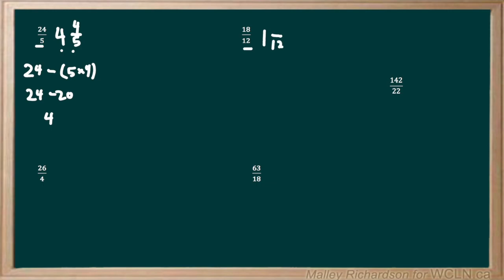To find the numerator, we take the numerator of the original question and subtract it by the denominator times the whole number. We know that 12 times 1 is just 12, so we get 18 minus 12 to get our final answer of 6. So our fraction is 6 over 12. But 6 over 12 can reduce down to 1 half, so we get 1 and 1 over 2 as our final answer.